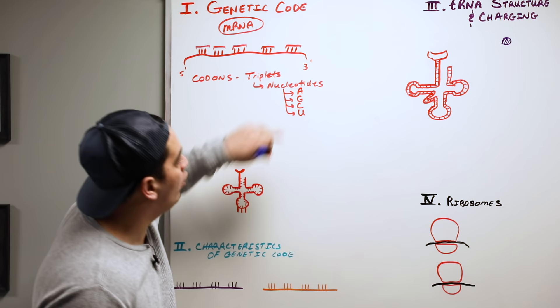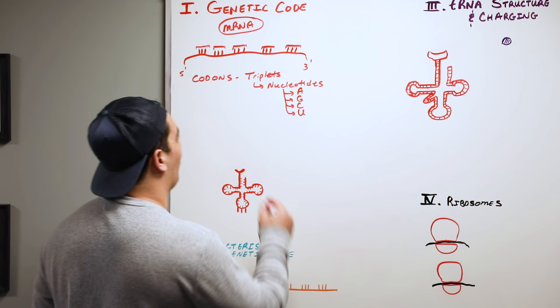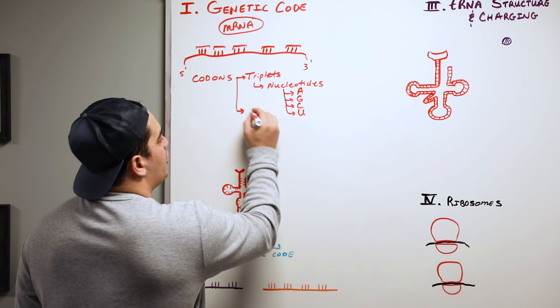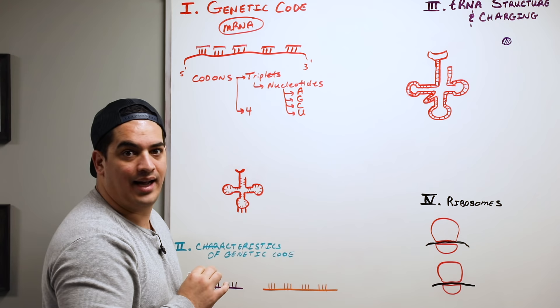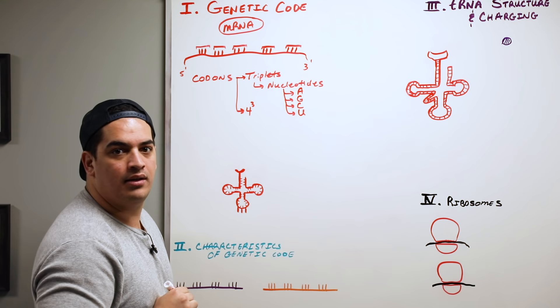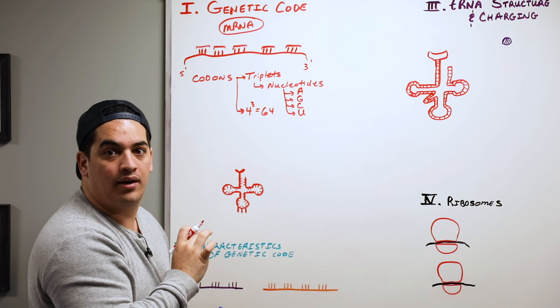Now, how many codons are there? Let's do a little math. We have triplets made up of four different types of nucleotides. So if I take four nucleotides raised to the third power — because there are three nucleotides in a codon — that gives me 64. There are 64 possible codons based upon the four nucleotides and the three nucleotides per codon.